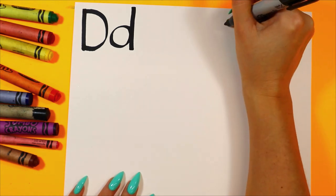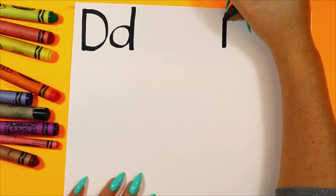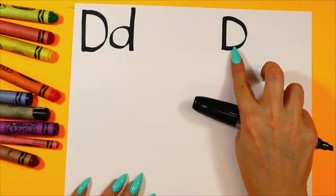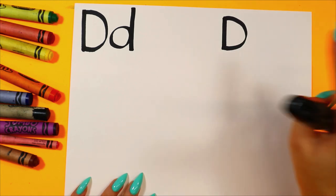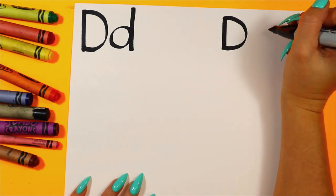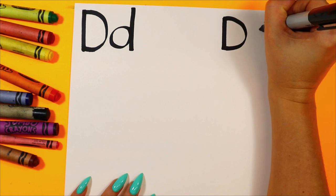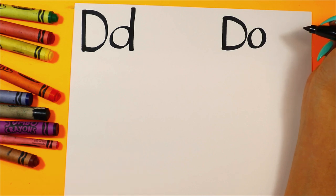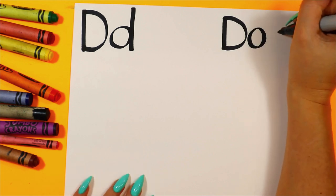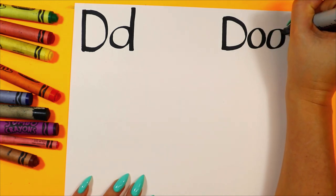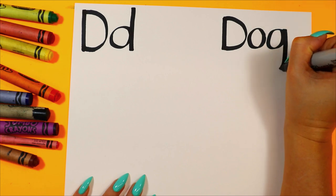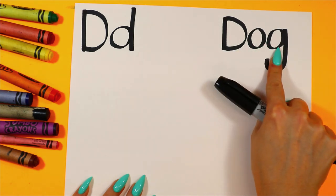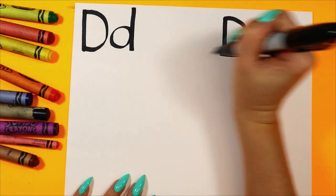Dog starts with the letter D. So we're going to do our line down, curving line around and attach. Dog — duh, ah, guh. What letter makes a guh sound? It's a G! So we'll do a circle and a line that goes down and curves back up. Duh, ah, guh — dog starts with the letter D.